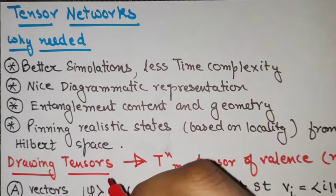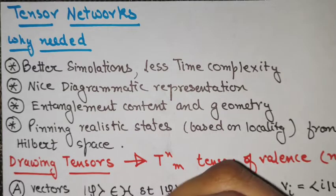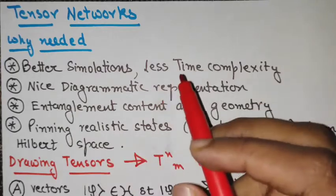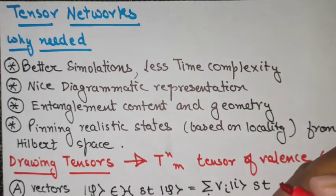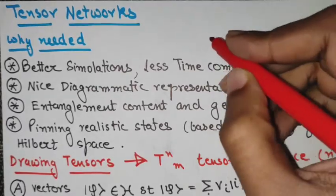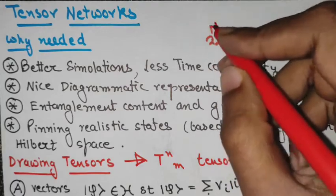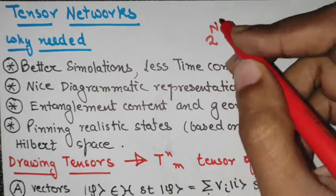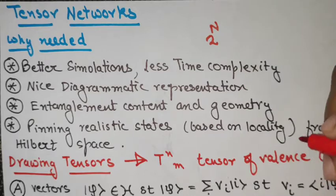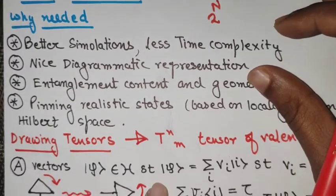Tensor networks are a diagrammatic representation of tensors and they are useful for various purposes. They help in better simulations and reduce the time complexity, because for a Hilbert space of n qubits you will have a space of 2^n. If n is an Avogadro number, this is a very huge number, and to deal with this situation we can simulate such things in a better fashion using tensor networks.